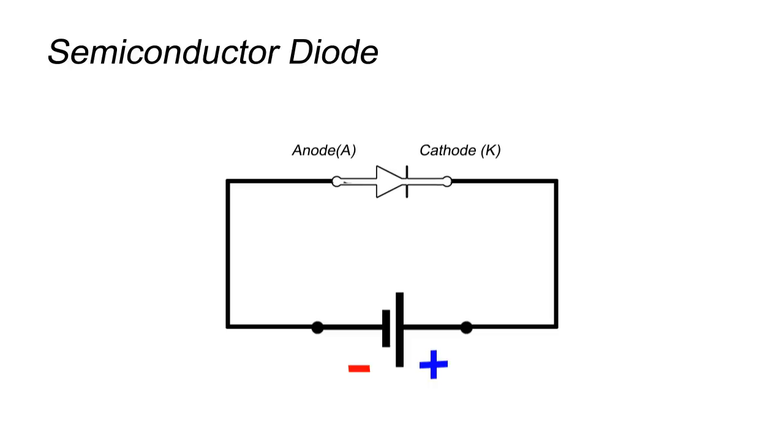In reverse bias, diodes do not allow electric current to pass through them, or we can say they behave like an open switch.